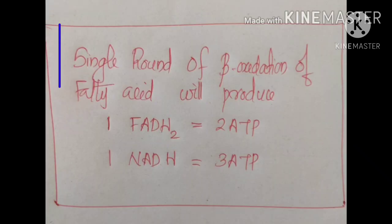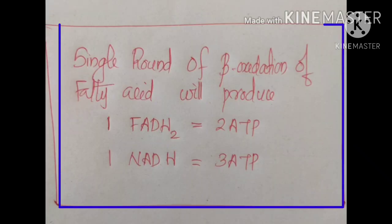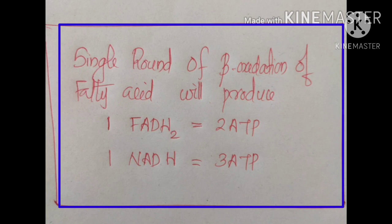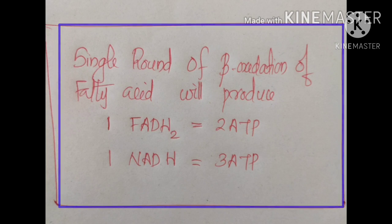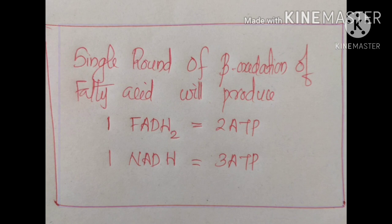A single cycle of beta oxidation produces 1 FADH2 and 1 NADH. One FADH2 on the electron transport chain produces 2 molecules of ATP, and 1 NADH yields 3 molecules of ATP. According to the modern energy concept, 1 FADH2 produces 1.5 ATP and 1 NADH produces 2.5 ATP, but the classical values are 1 FADH2 = 2 ATP and 1 NADH = 3 ATP.